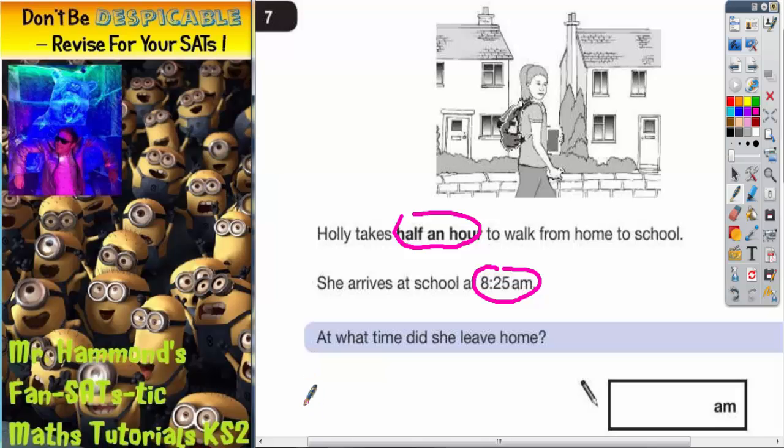I'm just going to set up a little diagram to show what's going on. So we've got home, and we've got school, and we're going from home to school. So we're going in this direction. And she arrives at school at 8:25am. So we need to write 8:25am underneath school.